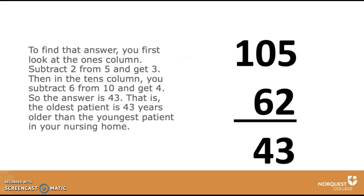To find that answer, you first look at the ones column. Subtract 2 from 5 and you get 3. Then, in the tens column, you subtract 6 from 10 and get 4. So the answer is 43. That is, the oldest patient is 43 years older than the youngest patient in your nursing home.